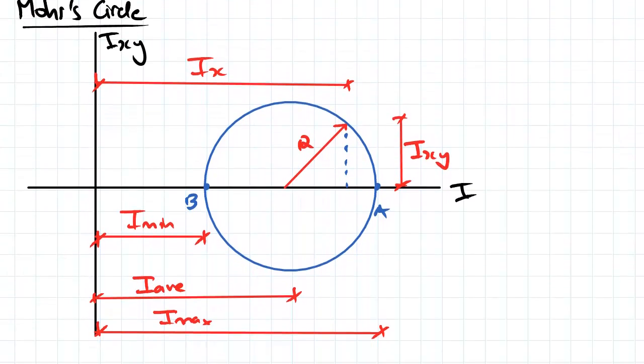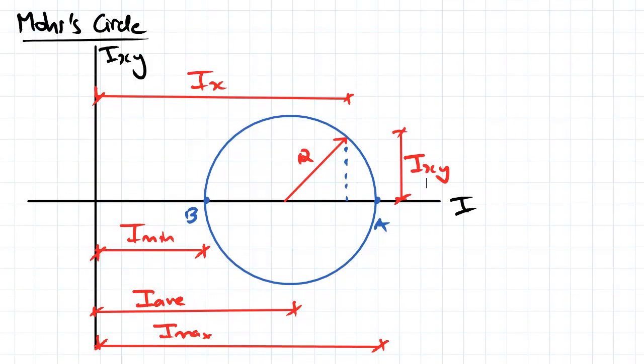So if we have a look here, we've got what's called Mohr's circle. On the x-axis we've got our second moment of area, and on the y-axis we've got our product second moment of area.